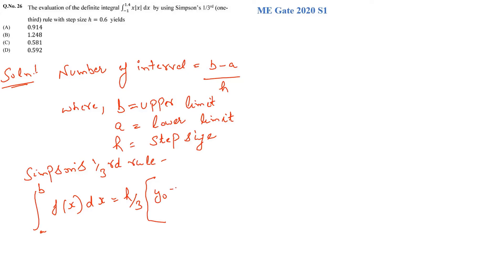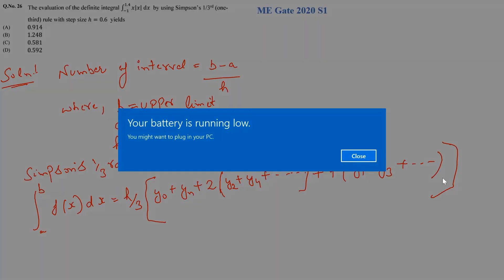y0 plus yn plus 2 times of y2 plus y4 plus so on plus 4 times of y1 plus y3 plus so on. So this states the Simpson's one-by-third rule.